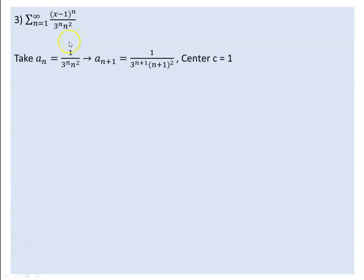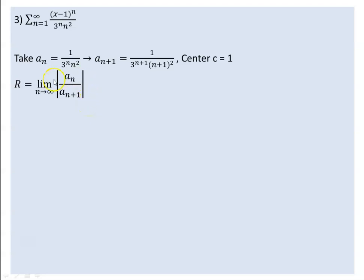So let's see the method. Take a_n to be 1 over 3 to the power of n squared. For the n plus one term, a_{n+1} is 1 over 3 to the power of (n+1) squared. The center c is 1, because the value that makes the expression zero is 1. To find the radius of convergence, R equals the limit as n goes to infinity of the absolute value of a_n over a_{n+1}.